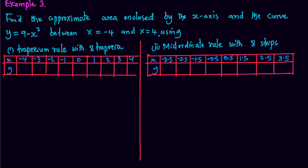When x is minus 4, y is 9 minus 16 which is negative 7. When x is minus 3, y is 0. When x is minus 2, y is 5. When x is minus 1, y is 8. When x is 0, y is 9.